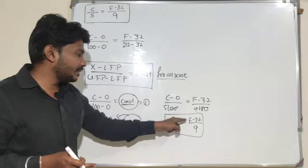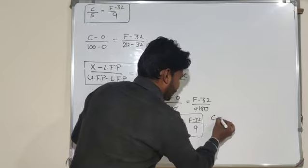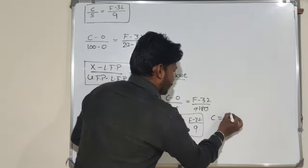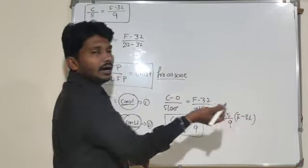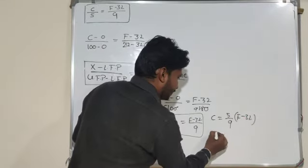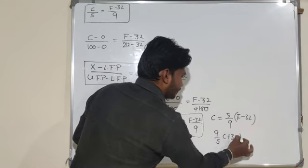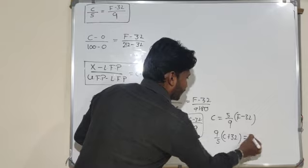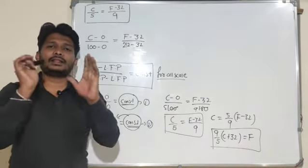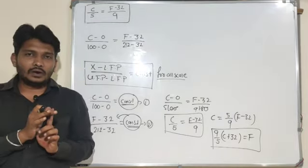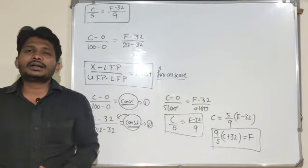So the relation between Celsius and Fahrenheit is: C equals 5 by 9 into (F minus 32), or equivalently F equals 9 by 5 into C plus 32. Using these formulas we can easily convert temperature from one scale to the other.